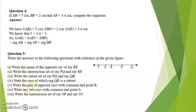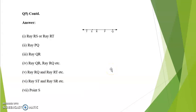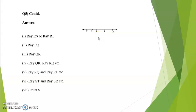Write the pair of opposite rays with common end point R. A few examples: ray RQ and ray RT. With all the points you can write various examples; in your notebook you can write the other examples as well.